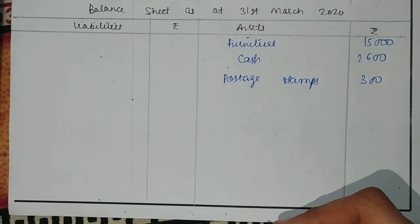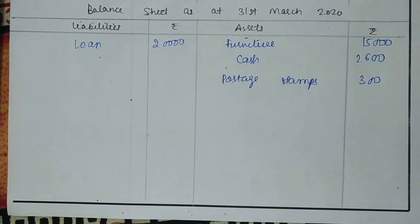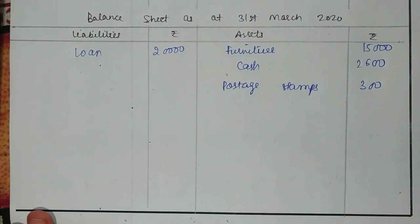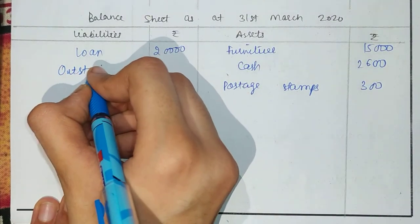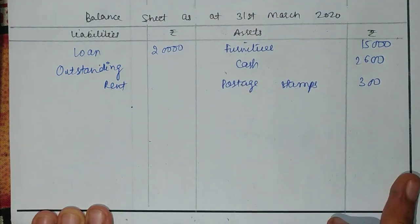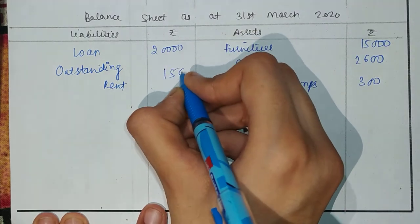You also have a loan in the additional information — the fourth point states the loan was $20,000. This was a liability for the organization, so include it. We also know that rent of $1,500 paid this year was related to last year — meaning it was outstanding at the start of the year. So outstanding rent of $1,500 is shown as a liability in the opening balance sheet.